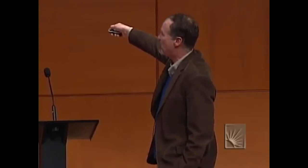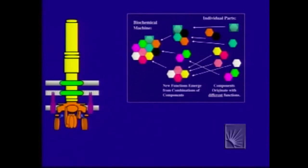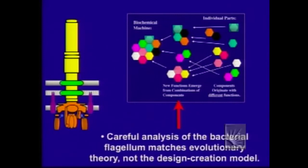Remember the claim: any precursor to an irreducibly complex system that is missing a part is by definition non-functional. This system is missing 40 parts and is perfectly functional. That statement is simply wrong — and that's not incidental. That is the heart and soul of the intelligent design argument, and in this case it turns out to be wrong. Furthermore, almost every protein in the bacterial flagellum is strongly homologous to proteins that have other functions elsewhere in the cell. A careful analysis of the flagellum actually matches evolutionary theory — the parts have functions of their own — not the intelligent design prediction. That's simply a fact.